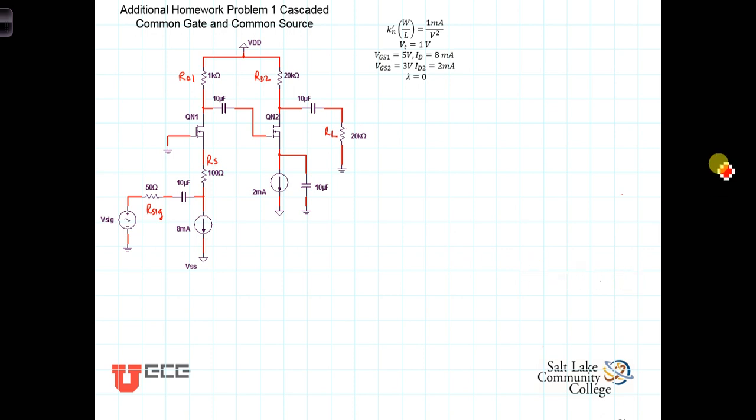In this video, we're going to see how the small signal model can be used to analyze a circuit that consists of two field effect transistors. We have two stages cascaded one after the other.